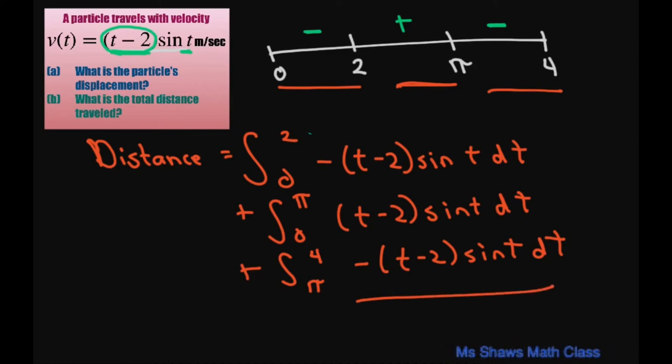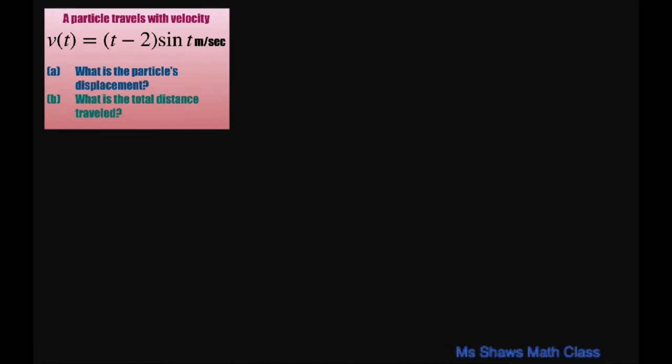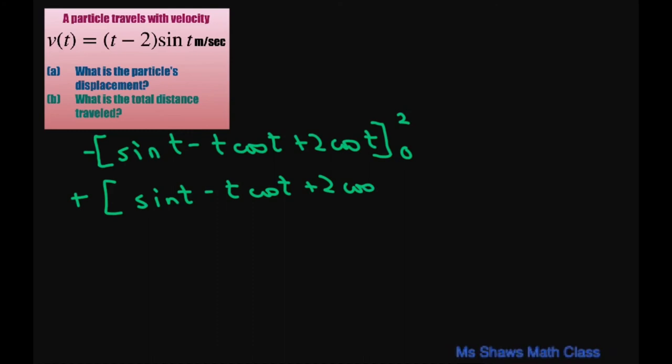We're going to write it all out. And we're going to get, we have negative sine of t minus t cosine of t plus 2 cosine of t. And then we have plus, same thing, sine of t minus t cosine of t, and then we're going there from 2 to pi.